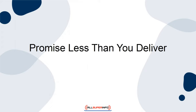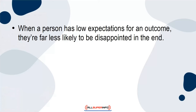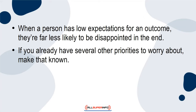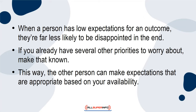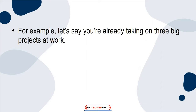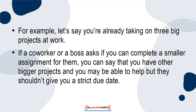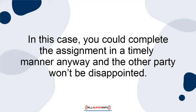Promise less than you deliver. When you promise less than you actually give to someone, you set them up with low expectations. When a person has low expectations for an outcome, they're far less likely to be disappointed at the end. If you already have several other priorities to worry about, make that known. This way, the other person can make expectations that are appropriate based on your availability. For example, if a co-worker or a boss asks if you can complete a smaller assignment while you're already taking on three big projects, you can say you have other bigger projects and they shouldn't give you a strict due date. In this case, you could complete the assignment in a timely manner anyway and the other party won't be disappointed.